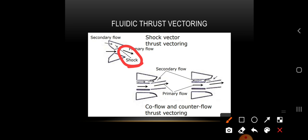Primary flows will be in a linear manner, while our secondary flows will guide these primary flows to move in other directions, which means co-flow and counter-flow thrust vectoring.